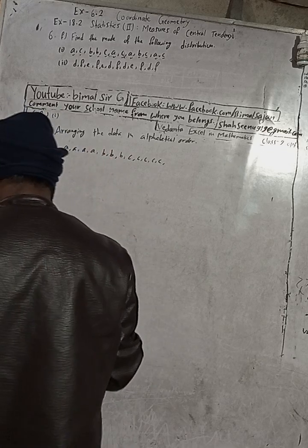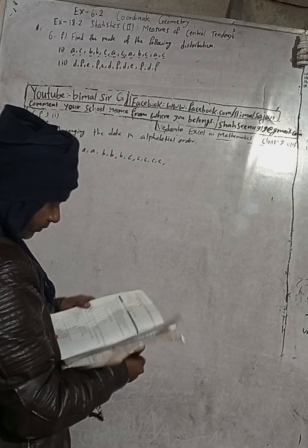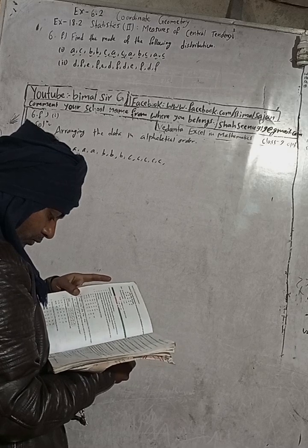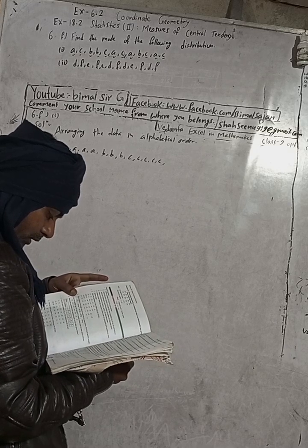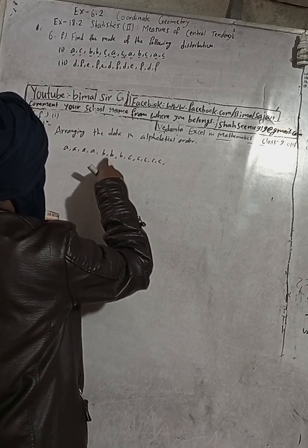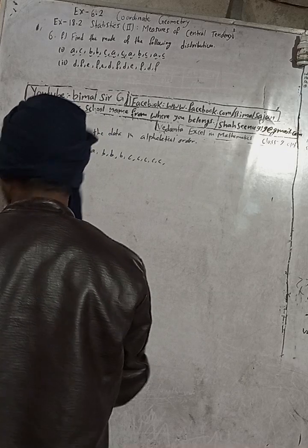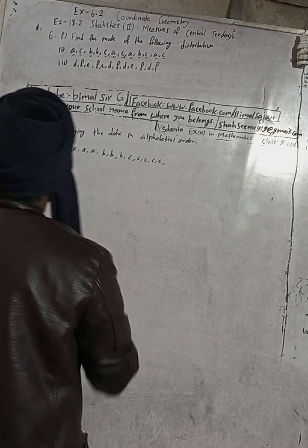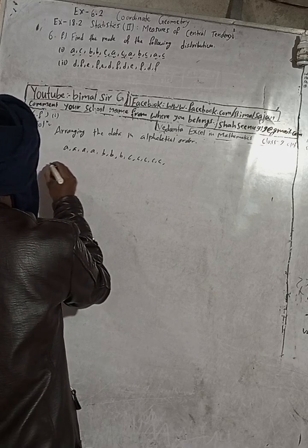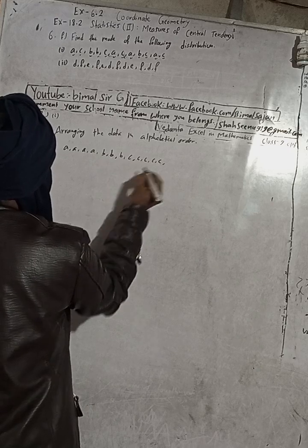I will also confirm from the book whether any alphabet is missed or not. Verifying the total: 12 items in all. Arranging the data in alphabetical order gives us 4 A's, 3 B's, and 5 C's.